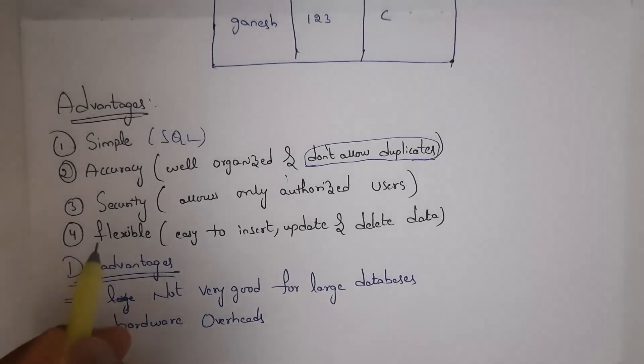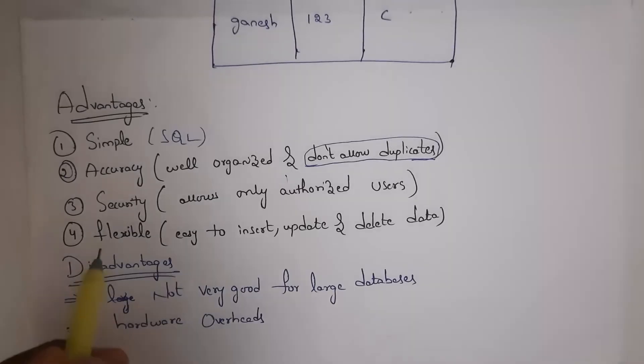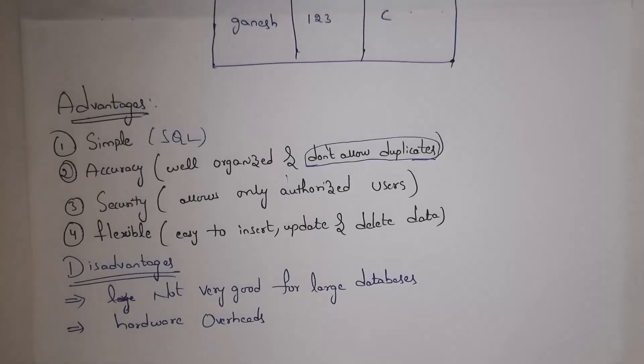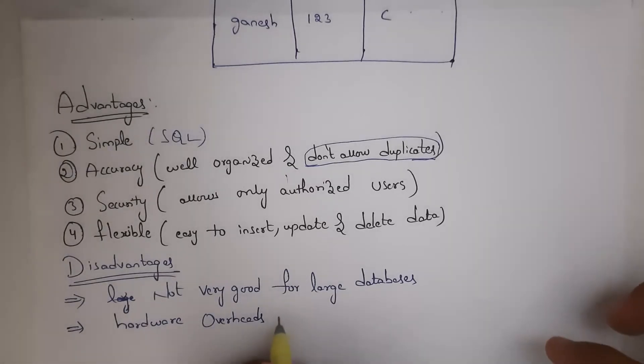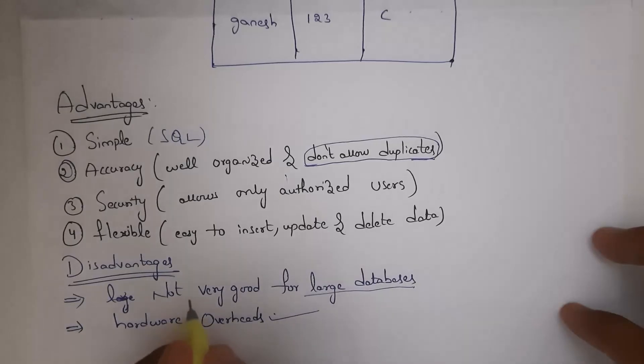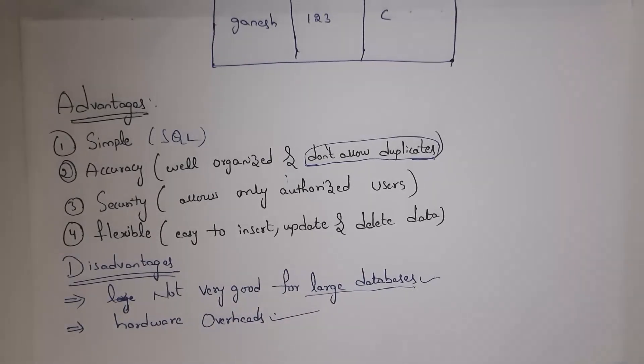Last advantage is flexible. We can easily insert data, update data or delete data in database. Next, disadvantages of relational model. In order to use relational database, you need high hardware support like high-end RAM, processor, hard disk, etc., otherwise it will cause hardware problems. This relational model is not suitable for large databases.